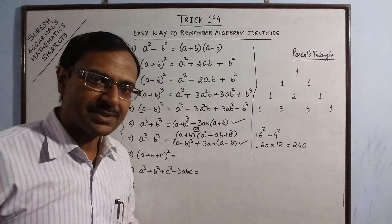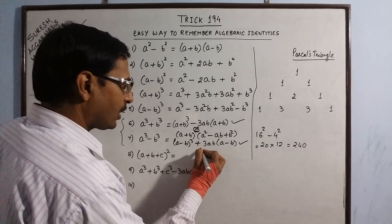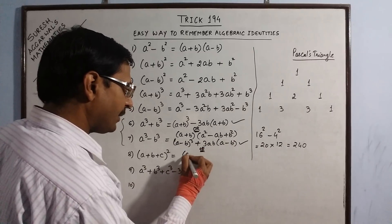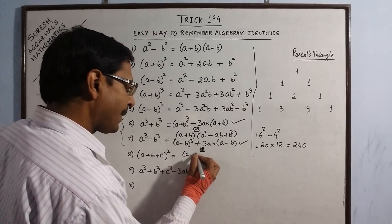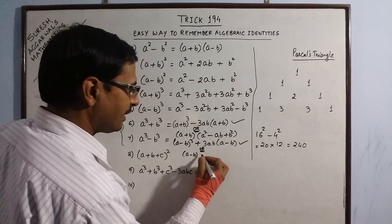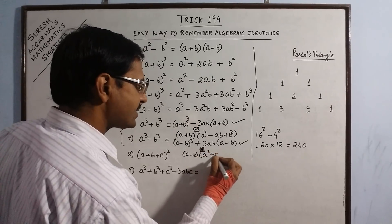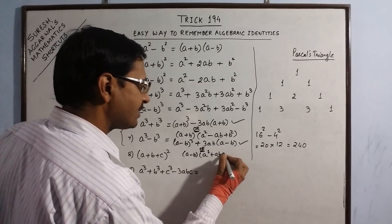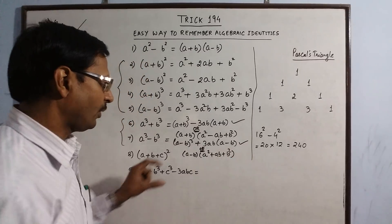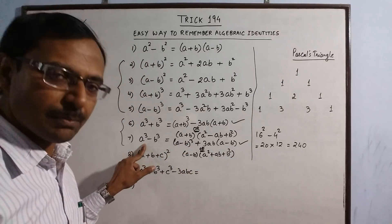All the signs are exactly reversed. Taking common factor A minus B, the second factor becomes A square plus AB plus B square. So this is the pair of formulas for A cube minus B cube.